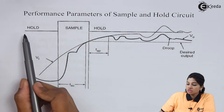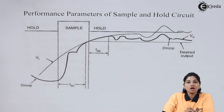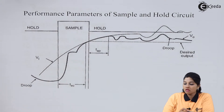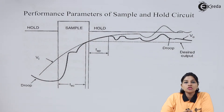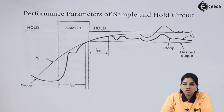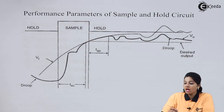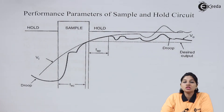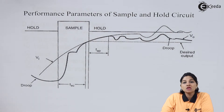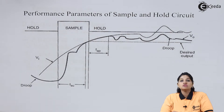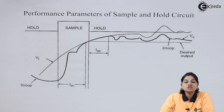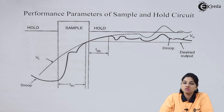This is how the sample and hold circuit output looks like. The sampling period during which the capacitor will charge to the instantaneous value, and the holding period during which the capacitor will hold the charge until the next sampling cycle. If we consider the actual response, we need to consider certain parameters.